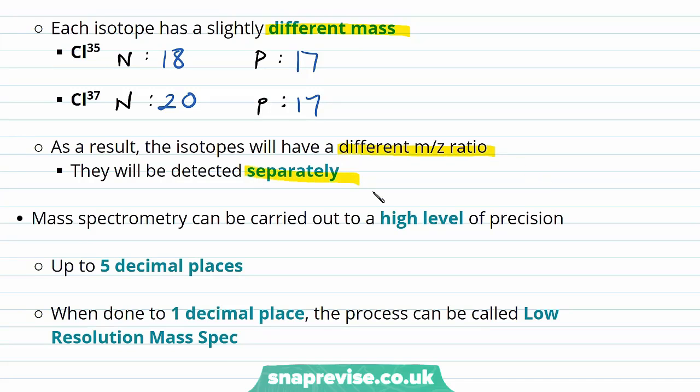And as a result, the isotopes will have a different mass to charge ratio and were detected separately by our mass spectrometer. Now the data produced and the process of mass spectrometry can be carried out to a high level of precision. It can be carried out to five decimal places. However, when done to one decimal place, the process can be called low resolution mass spec.